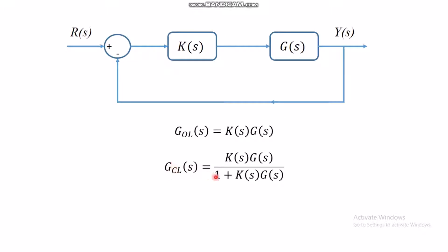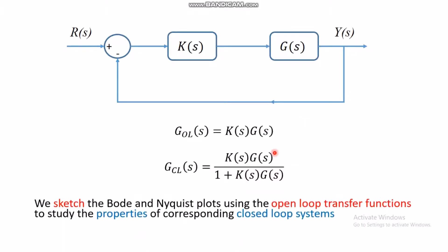The closed loop transfer function is K(s)G(s) / (1 + K(s)G(s)), which follows from block diagram algebra. If you want to use Bode plot or Nyquist plot to analyze stability, gain margin, or phase margin, you sketch those plots using the open loop transfer function K(s)G(s). The Bode and Nyquist of the open loop give you properties of the closed loop, as long as there is unity negative feedback.